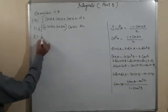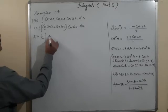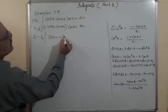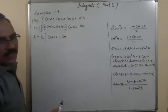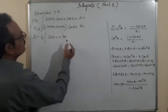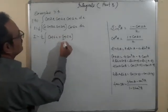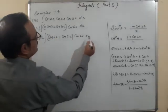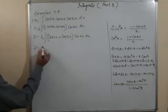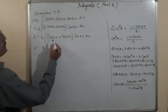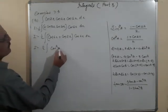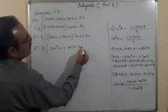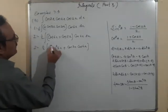I = (1/2)∫[cos(2x+4x) + cos(2x−4x)]·cos6x dx = (1/2)∫[cos6x + cos2x]·cos6x dx. Note: cos(−2x) = cos2x. Multiplying inside: I = (1/2)∫[cos²6x + cos2x·cos6x] dx.